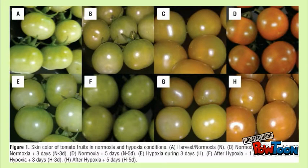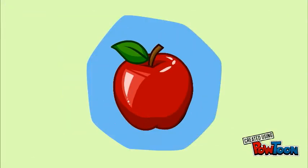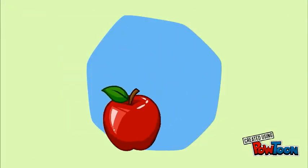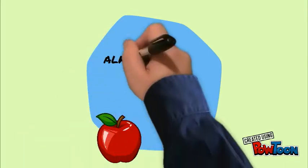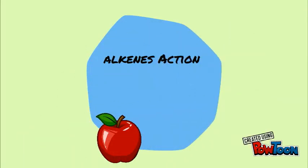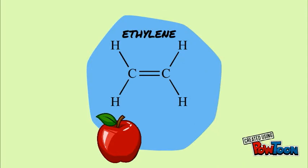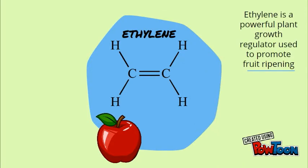Lastly, the ripening of fruits, as was already mentioned at the beginning of this presentation, is also an action of alkenes. Ethylene, the simplest known alkene, is a powerful plant-growth regulator, sometimes used commercially to promote the ripening of fruits.